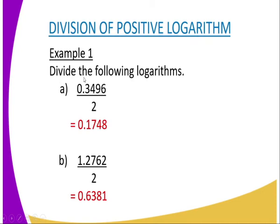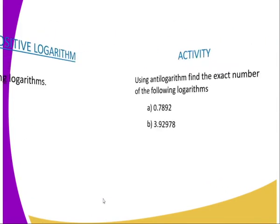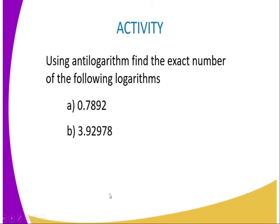We now look at division of logarithms. Whenever you divide a positive number you can use a calculator, but if there is a bar it must be treated in a special manner. For example, divide 0.3496 by 2 to get 0.1748, and divide the logarithm 1.2762 by 2 to get 0.6381.